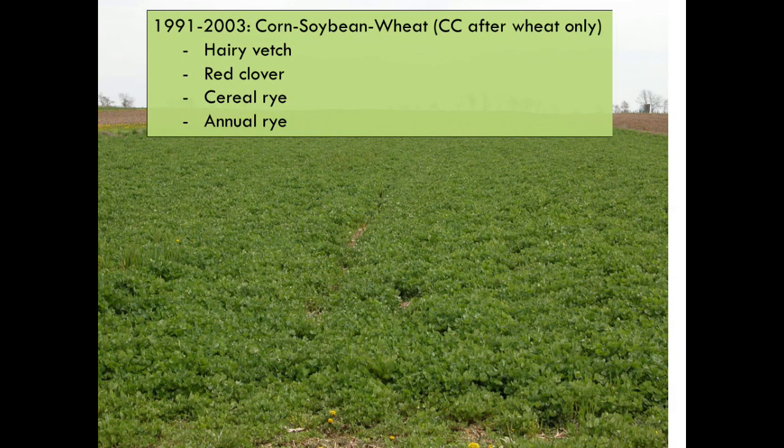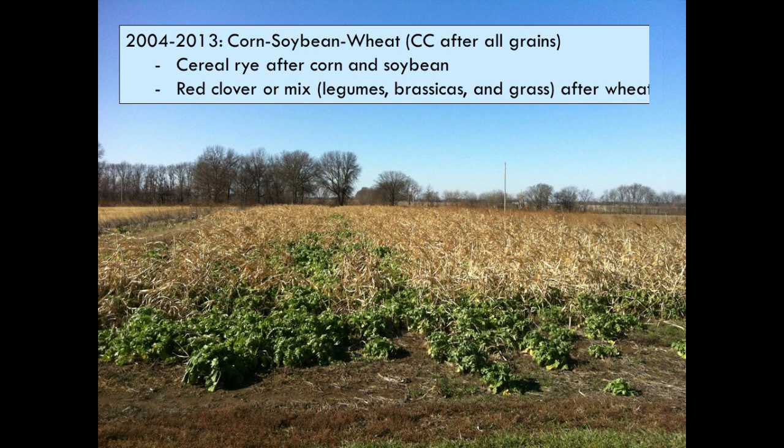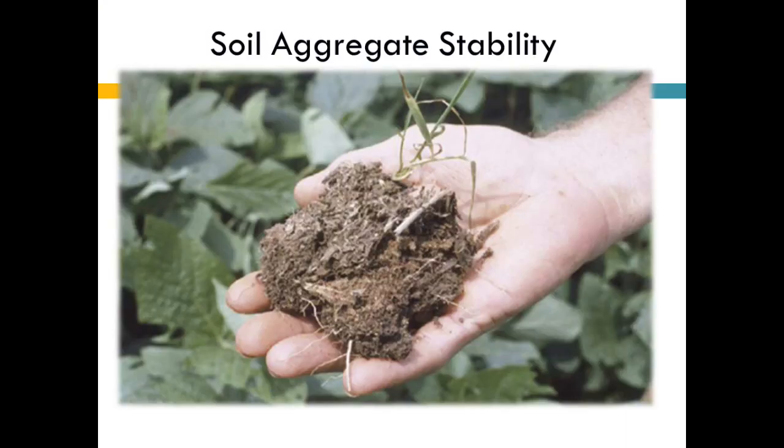For the first 10-12 years, we had a cover crop only after the wheat phase of a corn-soybean-wheat rotation. We used different cover crops: hairy vetch, red clover, cereal rye, and one year annual ryegrass. Then in 2004, we made some switches and actually included a cover crop as part of each grain season — there's a cover crop after corn, soybean, and wheat, with cereal rye primarily after corn and soybean, and red clover or a mix of legumes, brassicas, and grass after wheat.